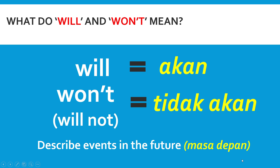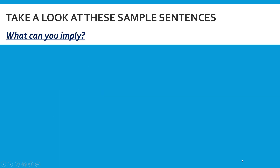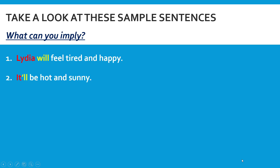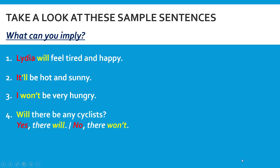The only difference between 'will' and 'won't' is that 'will' is for affirmative sentences and 'won't' is for negative sentences. Now take a look at these sample sentences to give you a clearer picture. What can you imply from these sentences? 'Lydia will feel tired and happy.' 'It will be hot and sunny.' 'I won't be very hungry.' 'Will there be any cyclists? Yes, there will. No, there won't.' 'What will the weather be like?'